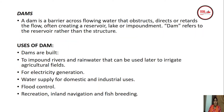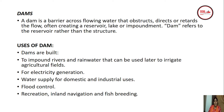A dam is a barrier across flowing water that obstructs, directs, or retards the flow, often creating a reservoir, lake, or impoundment. Dams are built to impound rivers and rainwater that can be used later to irrigate agricultural fields, generate electricity, provide water supply for domestic and industrial uses, control floods, and support recreation, inland navigation, and fish breeding.